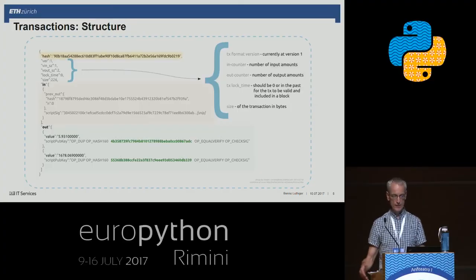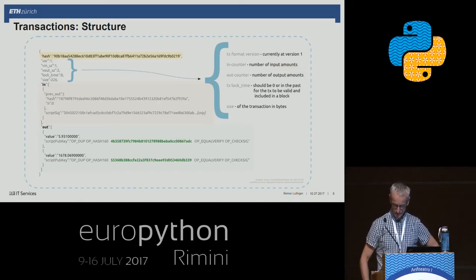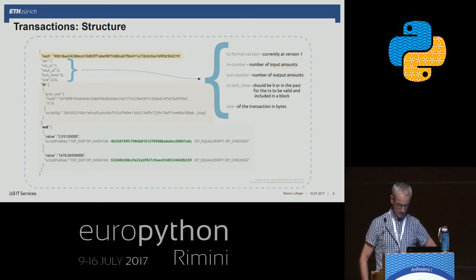Now we have to look at the transaction, because the transaction is the most important thing in a cryptocurrency. We have to prove that ownership of coins in the network is guaranteed. A transaction has the following structure: in yellow, the transaction ID which is a hash; then some descriptors and metadata; then an input in the pink area; and an output in the green area.